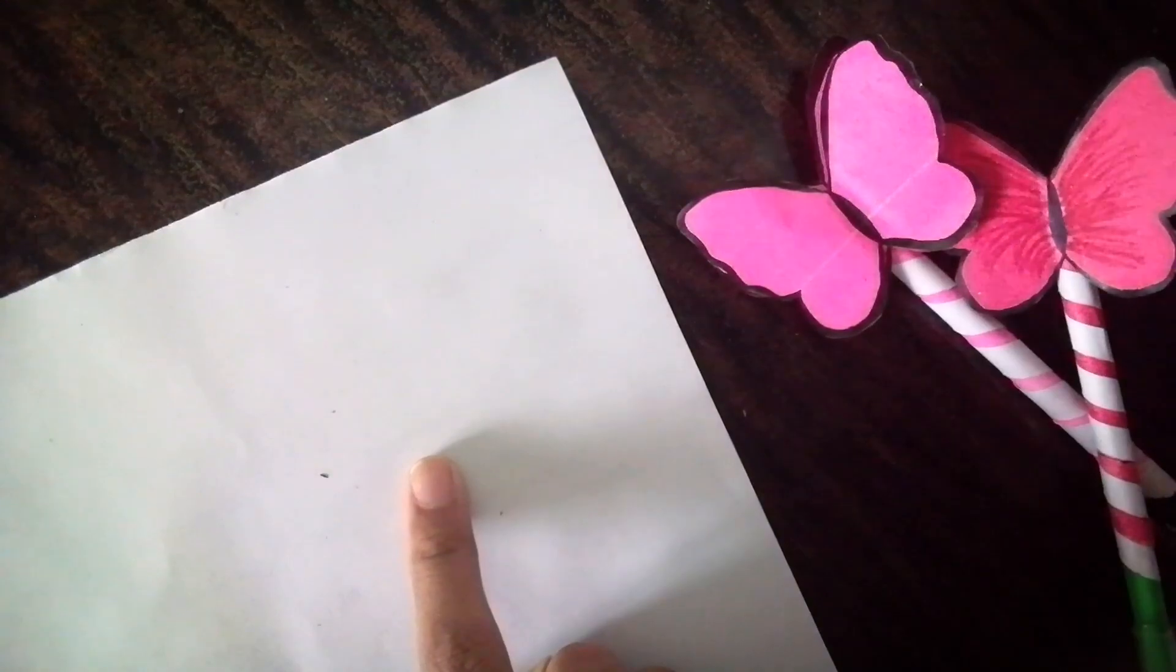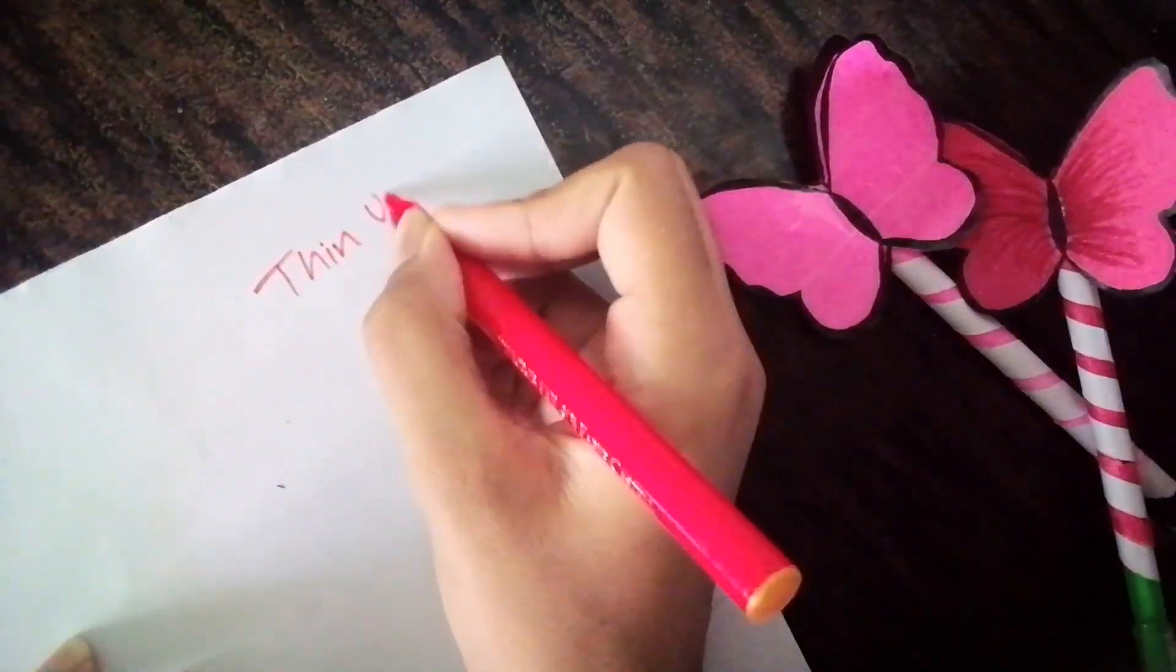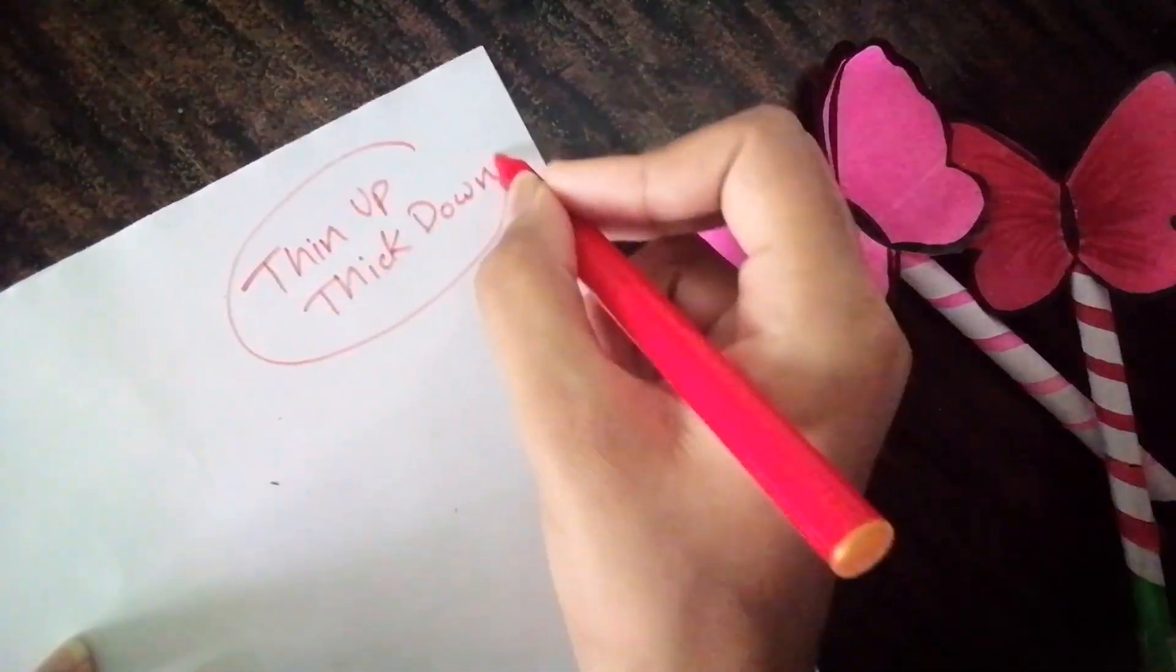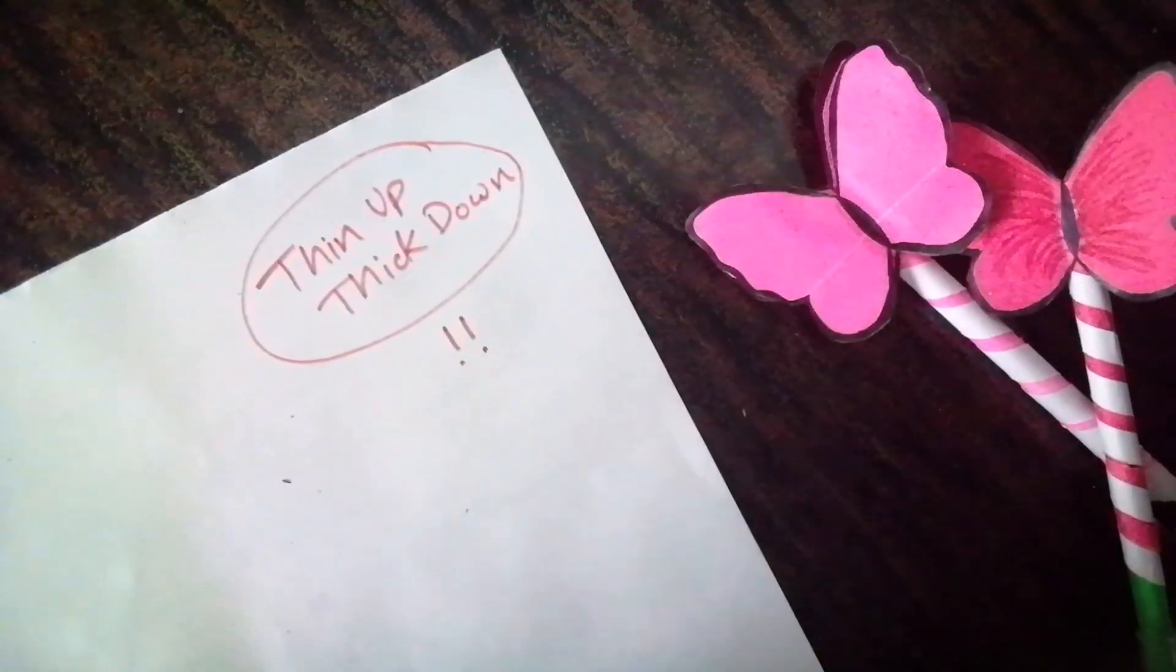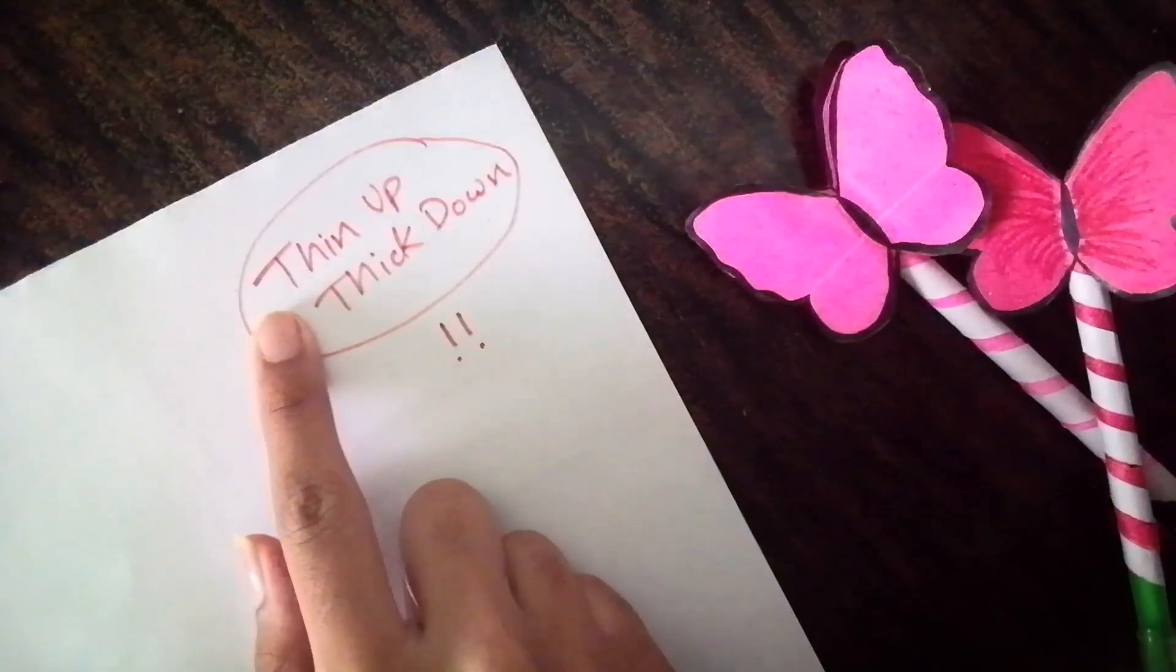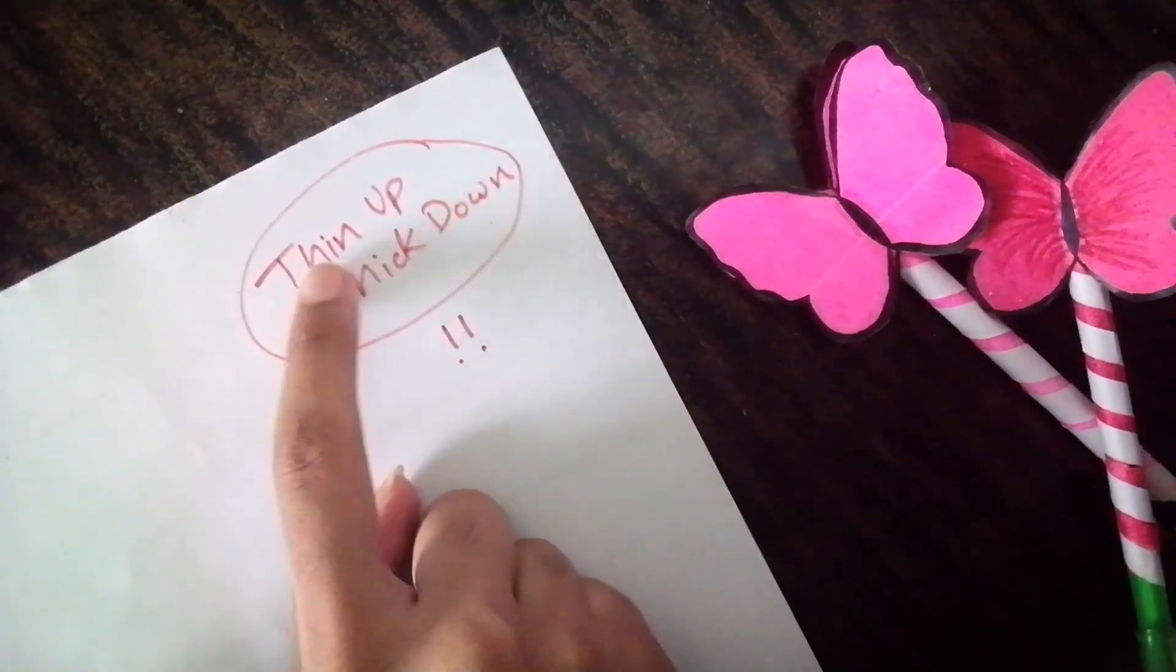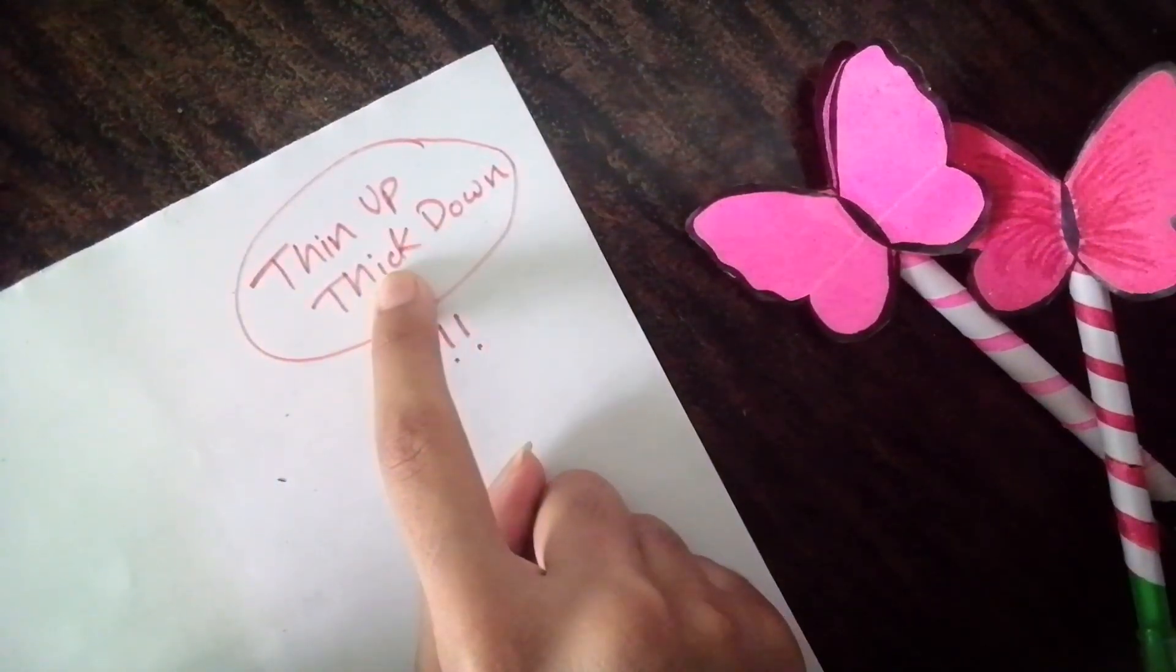There is a simple basic formula, or you can call it a rule for calligraphy, which is really important: thin up, thick down. But before I tell you the meaning of it, remember it's really important. Thin up means the lines which are going up should be thin, and the lines which are going down must be thick.